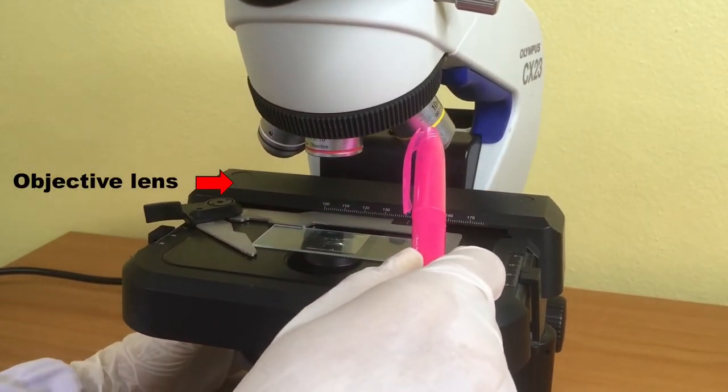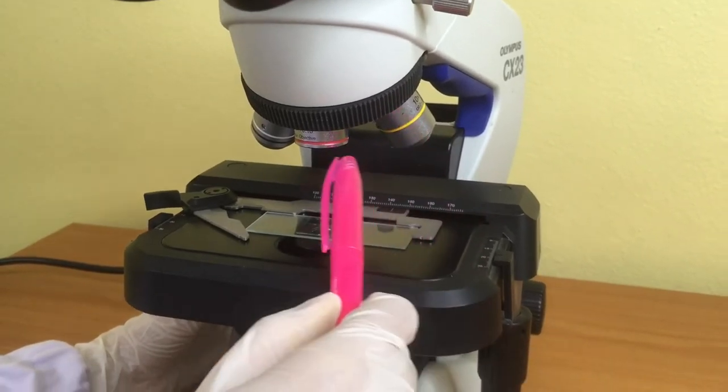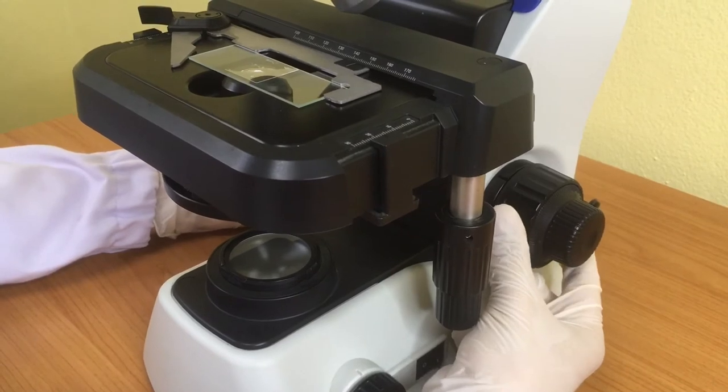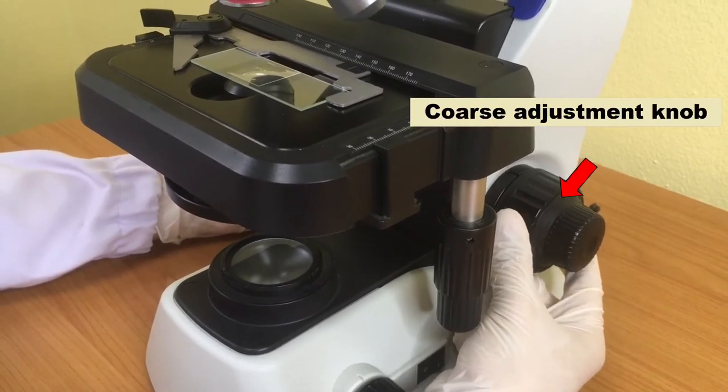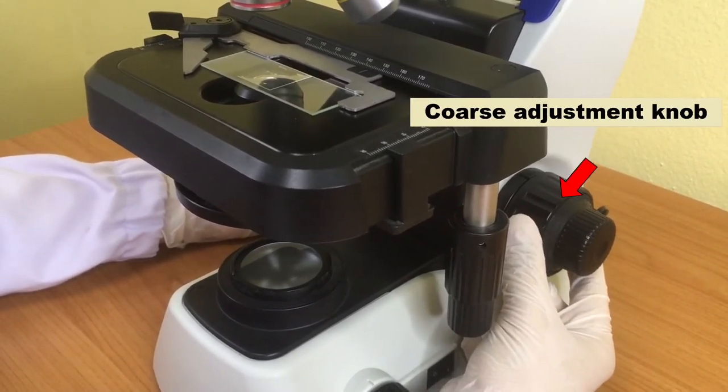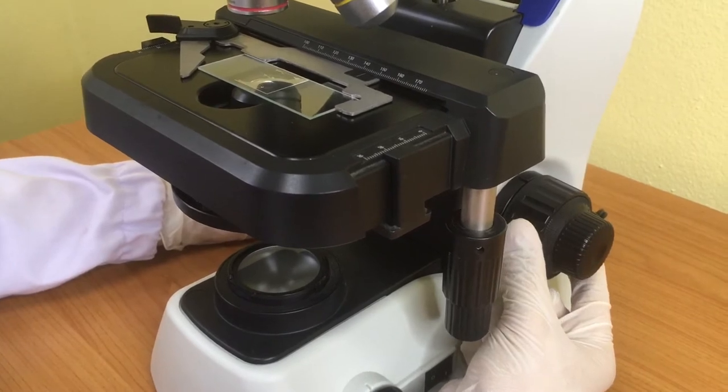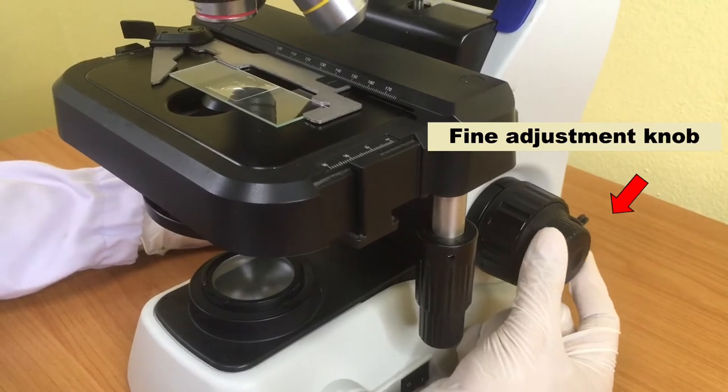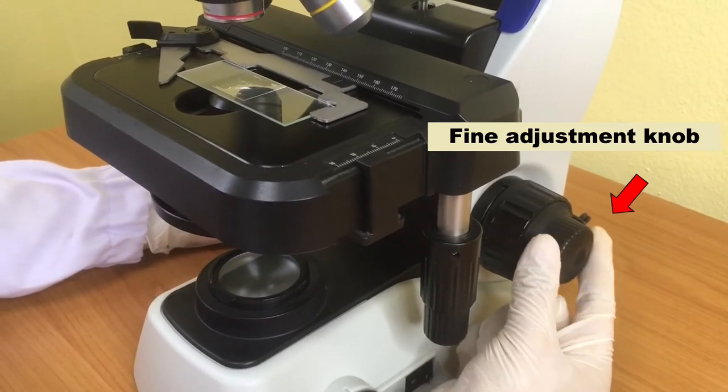At the lowest magnification of the objective lens, use the coarse adjustment knob to bring the specimen in focus. If the image is already in focus and you need to bring it to sharp focus, you need to turn the fine adjustment knob.